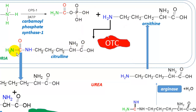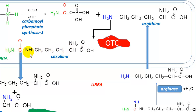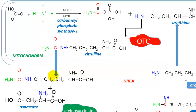Ornithine transcarbamylase reacts ornithine and carbamoyl phosphate to produce citrulline. Citrulline also has features of an amino acid — the alpha carbon, alpha hydrogen, alpha amino group, and alpha carboxylate — as well as its side chain.